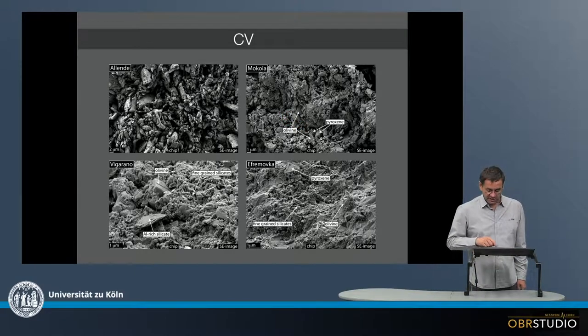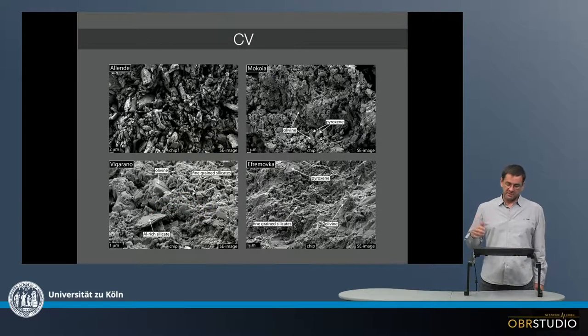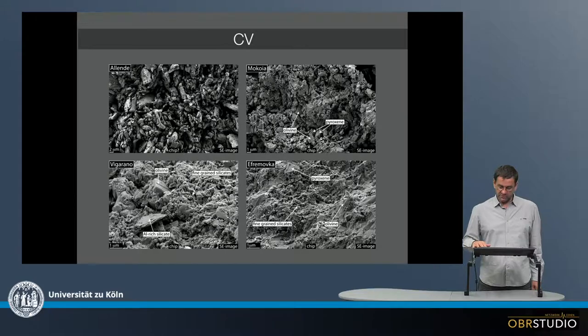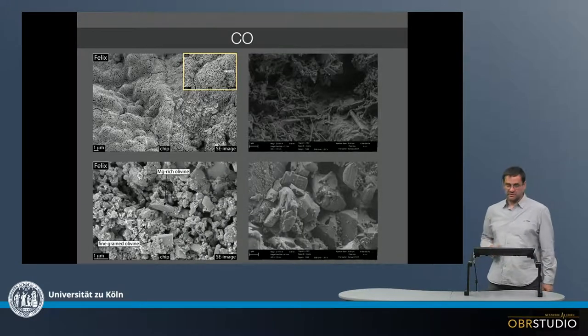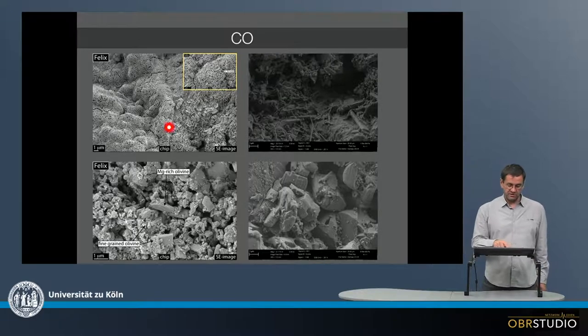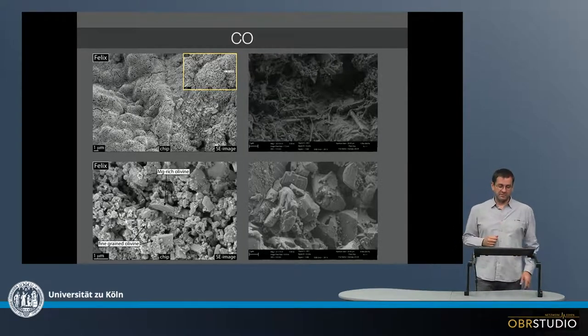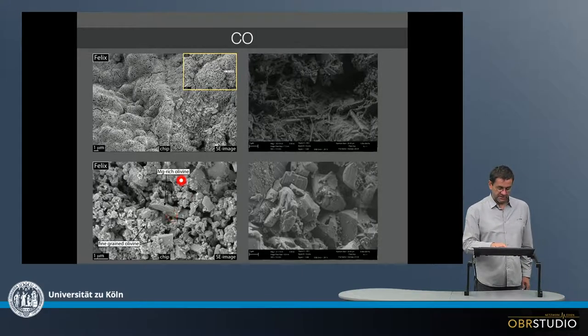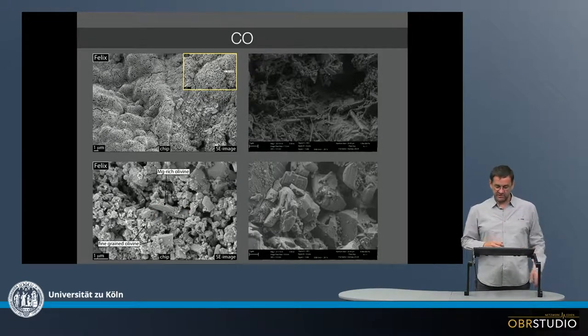The same is seen here in Mokoya, in Vigarano, there's a little less space in between, so there might have been some overprint on the parent body here. And in CO this is quite a nice and interesting image here, so this is certainly some hydrothermal precipitation likely on the parent body here. So this is another piece of Felix, both Felix here and in the lower one there are individual grains here, whereas here this must be some kind of precipitation.